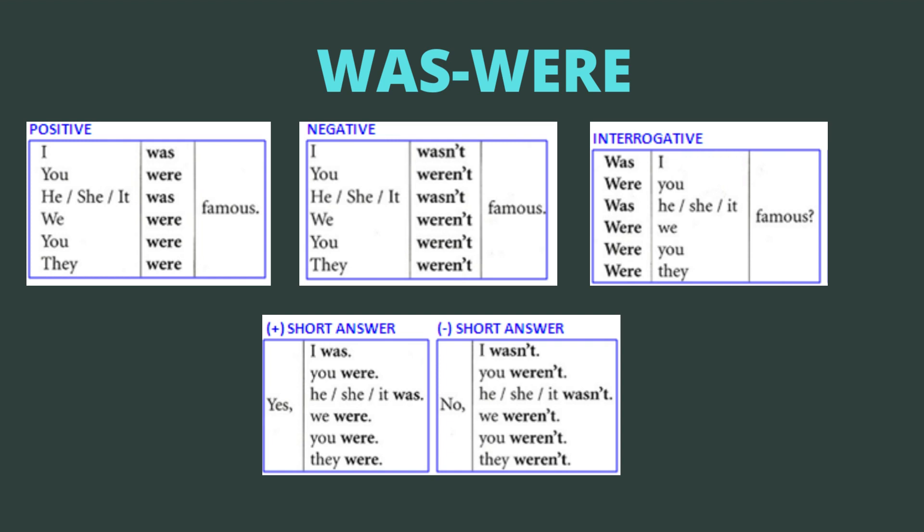Vamos al último cuadro con las respuestas que podemos utilizar en la forma interrogativa. Si yo digo was I famous? — yes, I was, or no, I wasn't. Were you famous? — yes, you were, or no, you weren't. Was he/she/it famous? — yes, he/she/it was, or no, he/she/it wasn't. Esta es la estructura del uso de was and were.